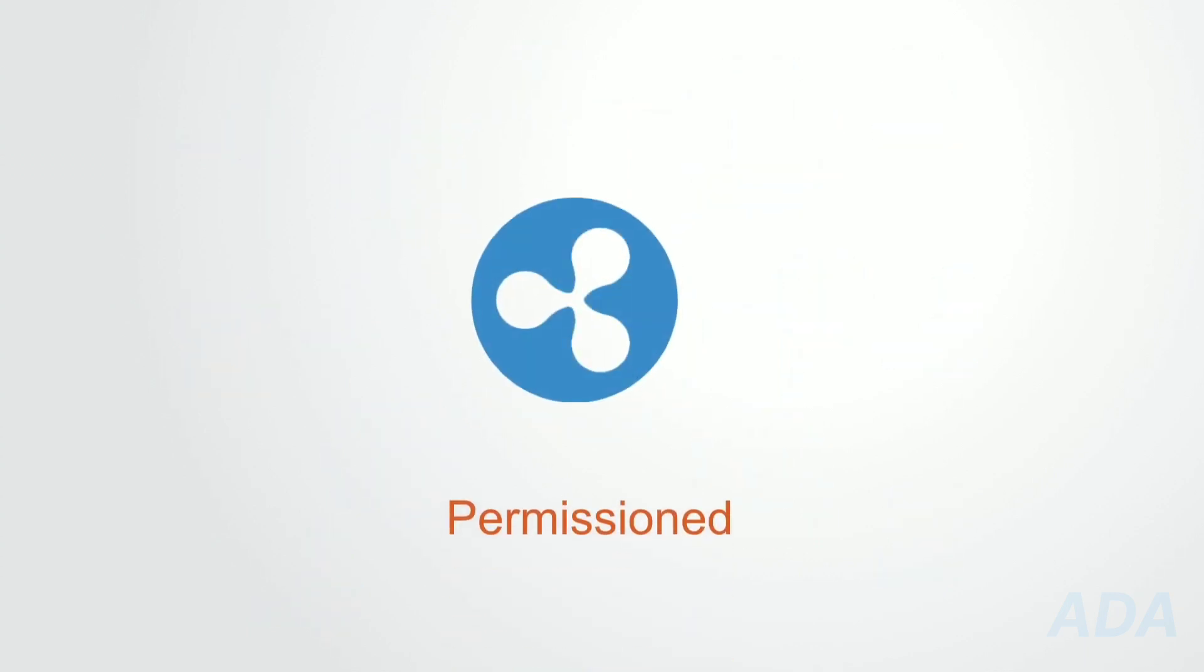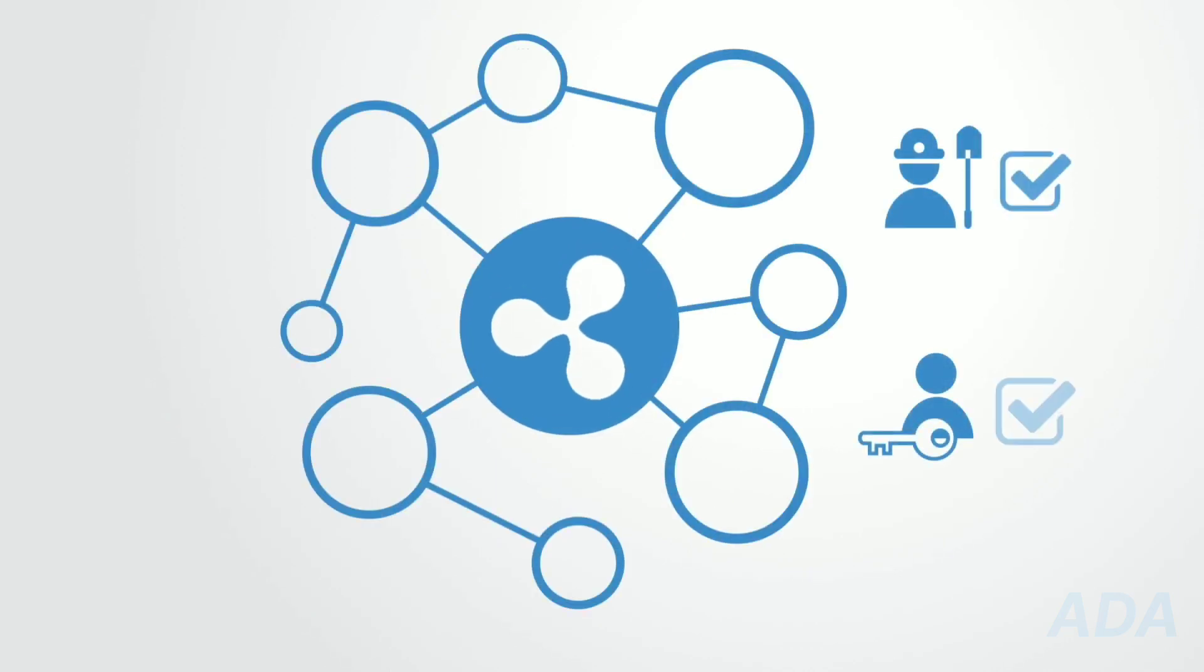Ripple is an example of a permission blockchain where the creators of the network determine who may act as transaction validators on that network.